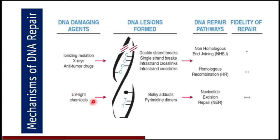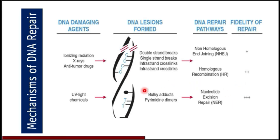UV light and other chemicals cause DNA damage by forming bulky adducts — nucleotides with a bulky size due to added groups — and pyrimidine dimers such as thymine-thymine and cytosine-cytosine dimers. To correct bulky adducts and pyrimidine dimers, we have nucleotide excision repair, which has very high fidelity. This may be an MCQ: the DNA repair pathway used to correct pyrimidine dimers is nucleotide excision repair.